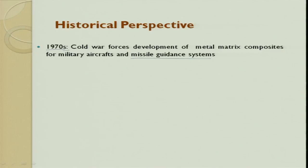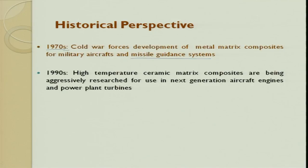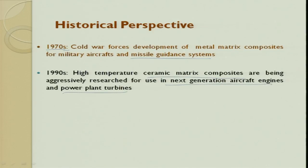In the 1970s, the cold war forced development of metal matrix composites for military aircraft and missile guidance systems. So metal matrix composite, somewhere in the 1970s, picked up and started getting into action. In the 1990s, high temperature ceramic matrix composites came and started getting into next-generation aircraft engines and power plants.